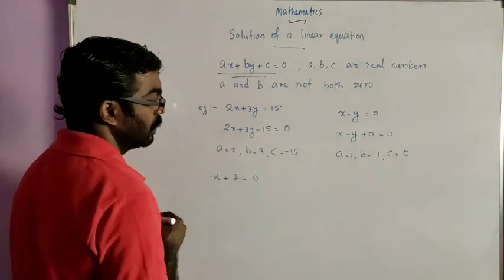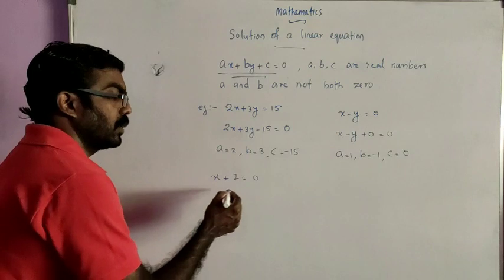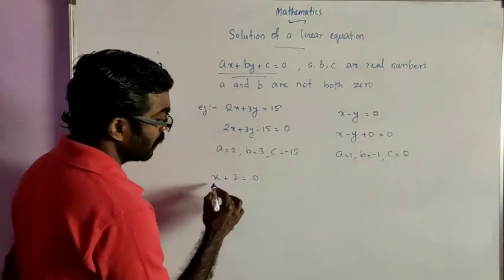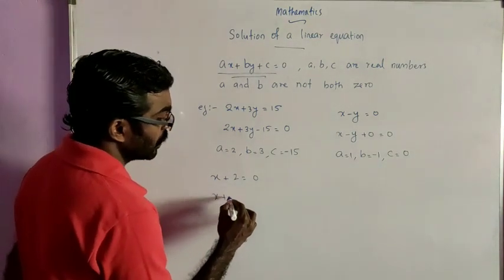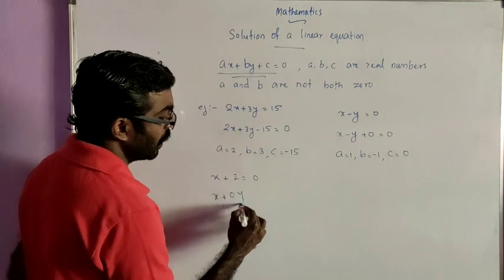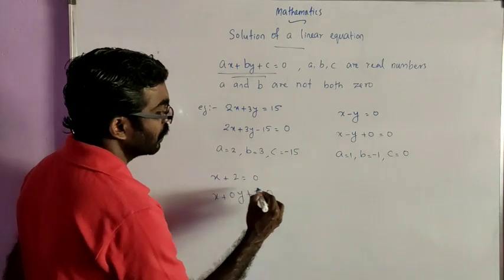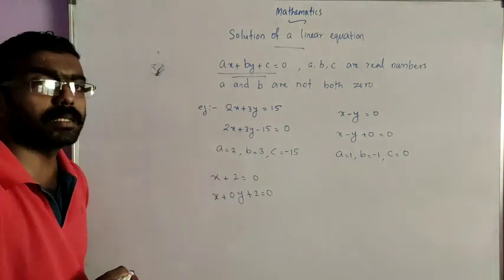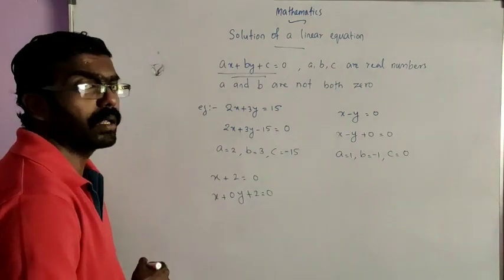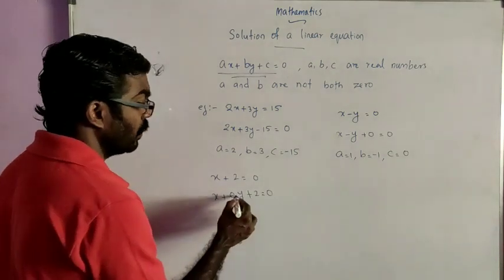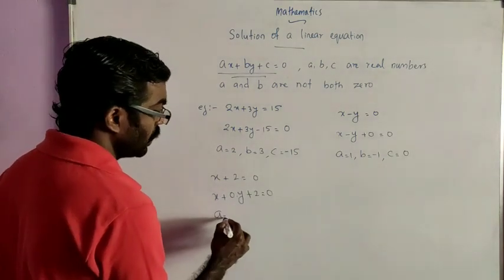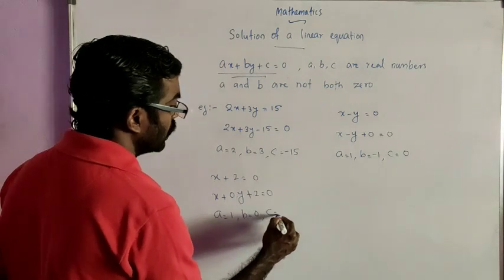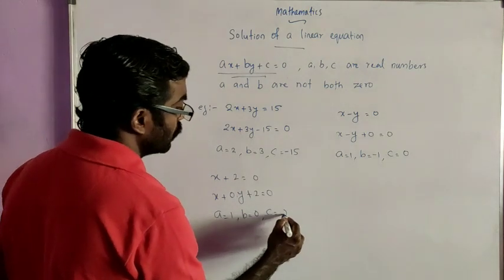Another situation: x plus 2 is equal to 0. Here also we can convert it into a linear equation in two variables. We can rewrite this equation as x plus 0y plus 2 is equal to 0. The y term is missing, so we write 0 times y. Here a is equal to 1, b is equal to 0, and c is equal to 2.